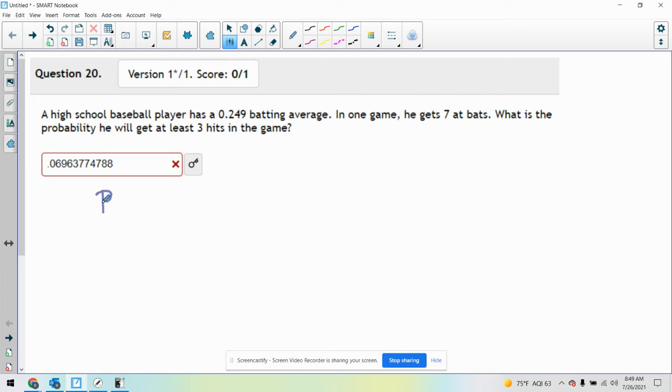So there's two ways you could do it. You could say, all right, let's find the probability of getting three hits, find the probability of getting four hits, find the probability of getting five, six, and seven.